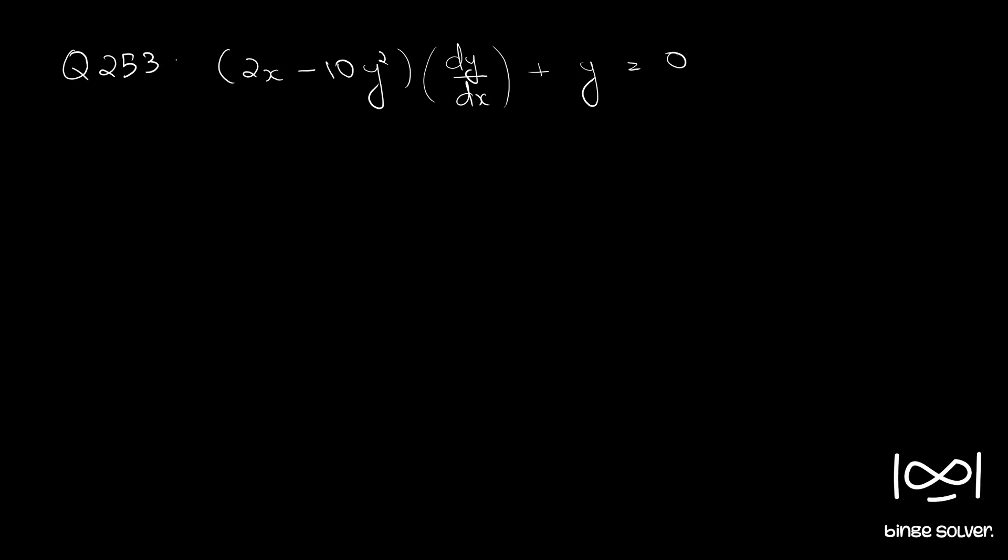Question number 253: (2x - 10y²)(dy/dx) + y = 0. Let's rearrange this equation.